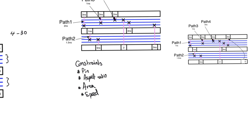If the design is only area constrained, we tell the tool to fit the design within a certain area and then extract the highest speed from the chip. If the design is only speed constrained, we want it to perform at a certain clock frequency and don't care about area. Most designs are constrained in both area and speed, so the tool must fit the design within a certain area and ensure it works at a certain speed.